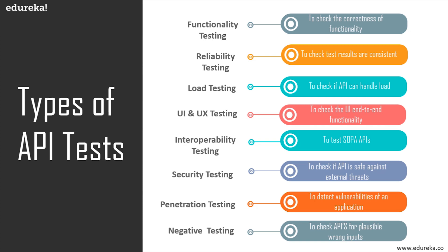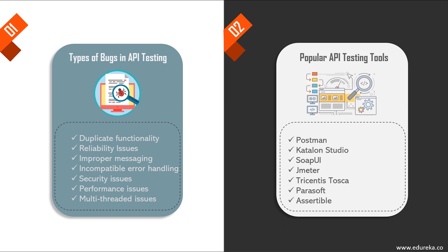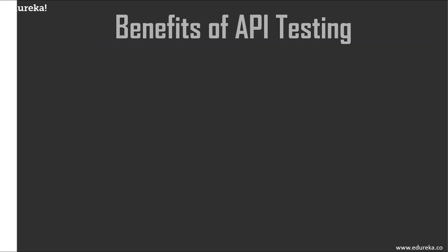By performing these tests, you're checking for duplicate or missing functionality, improper messaging, multi-threaded issues, performance issues, incompatible header handling, or reliability issues. Since API testing is gaining popularity, many tools are available. Some of the top API testing tools for REST and SOAP web service testing include Postman, Katalon Studio, SoapUI, Tosca, Parasoft, and Assertable. You can choose any one according to your requirements and comfort.